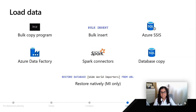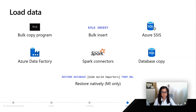You can also use things like bulk insert, except instead of pointing from on-prem files, you're pointing from something like Azure Blob Storage. There are various options available. One that you might not have known is that you can actually use Spark Connectors to connect to Azure SQL Database.